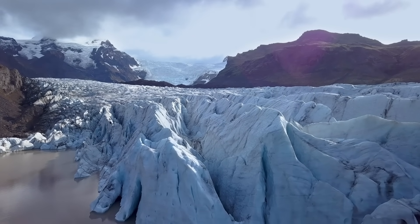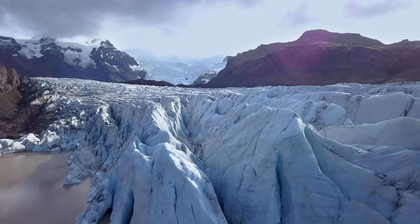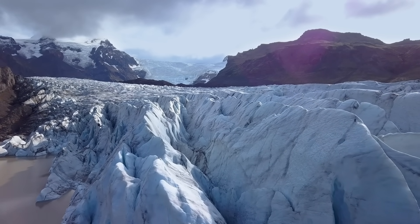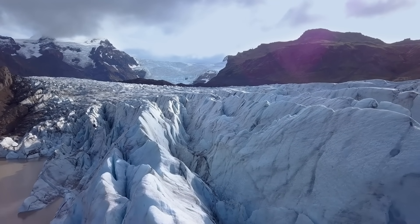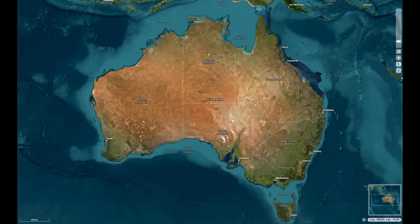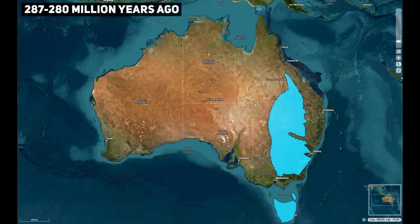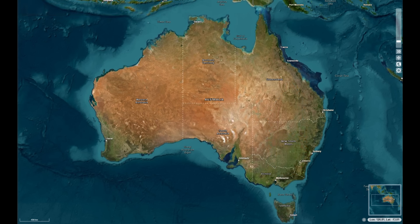Throughout the Permian glaciation, the extent of ice fluctuated. Stratigraphic studies indicate multiple glacial-interglacial cycles within the Late Carboniferous to Permian interval. The early Permian saw the peak of ice cover in Australia, sometimes termed the P1 glaciation, when ice sheets covered large areas including a massive ice sheet in what is now Western Australia. Later in the Permian, glaciation became more restricted to alpine and valley glaciers, persisting in eastern Australia until about 255 million years ago.